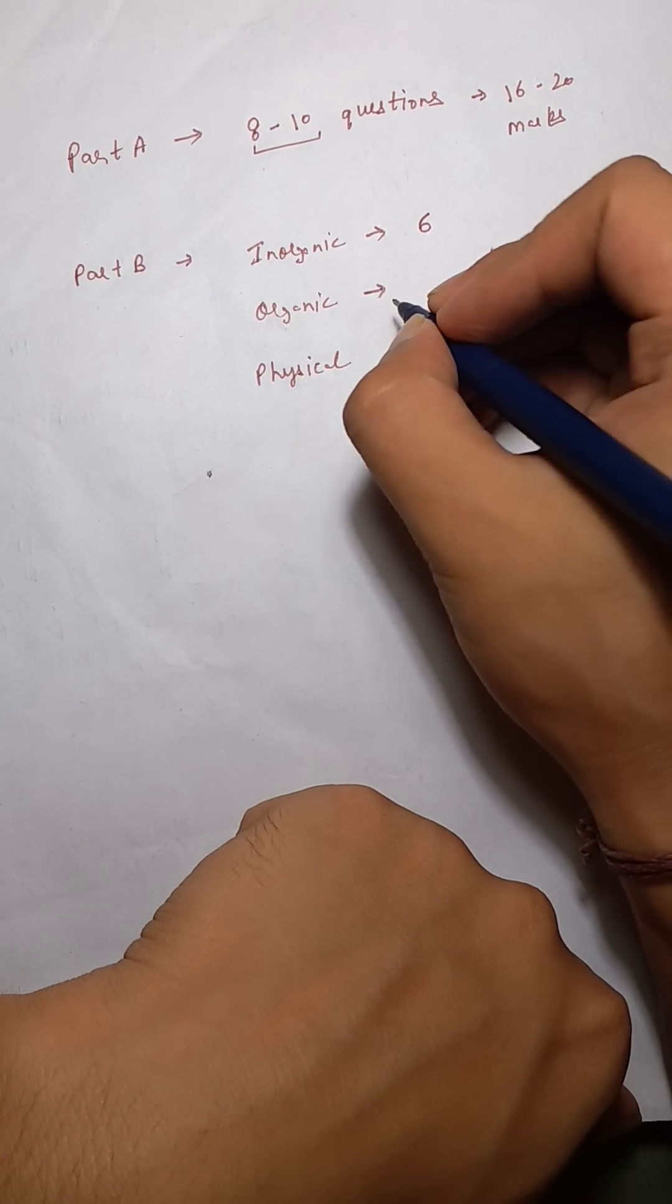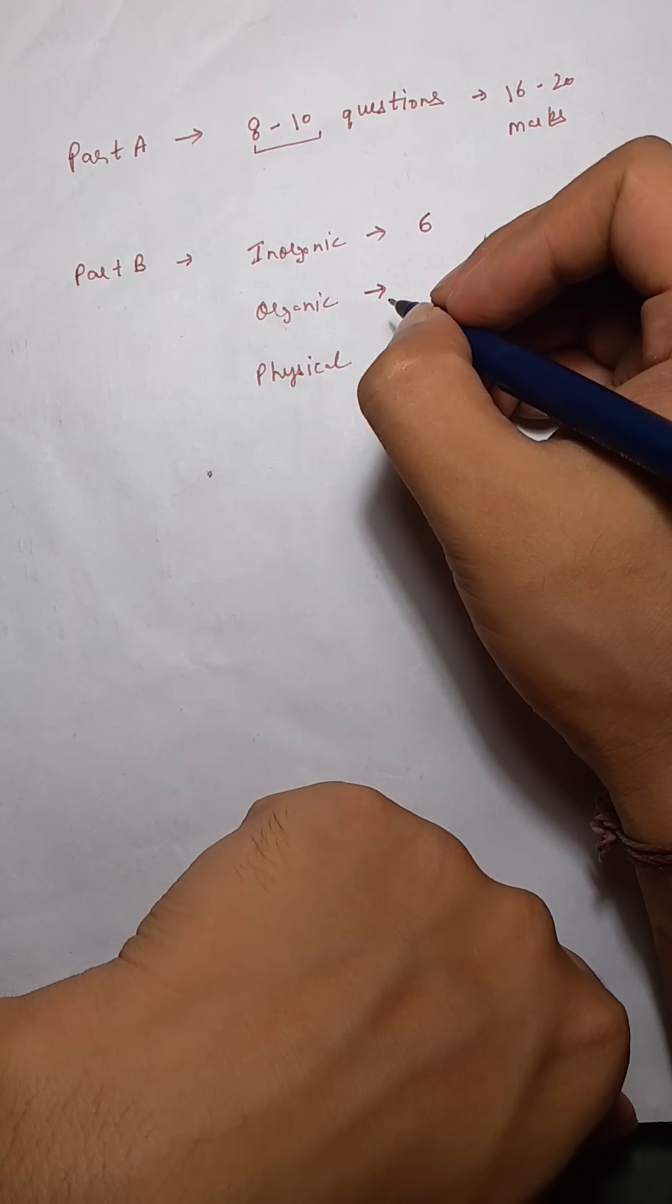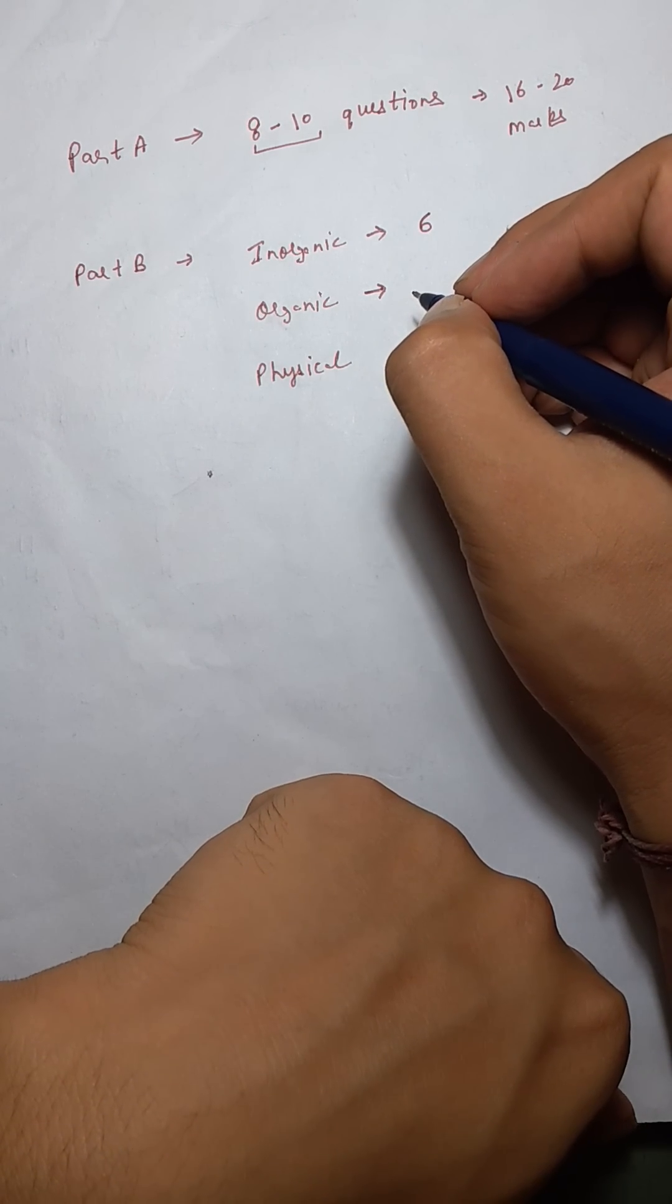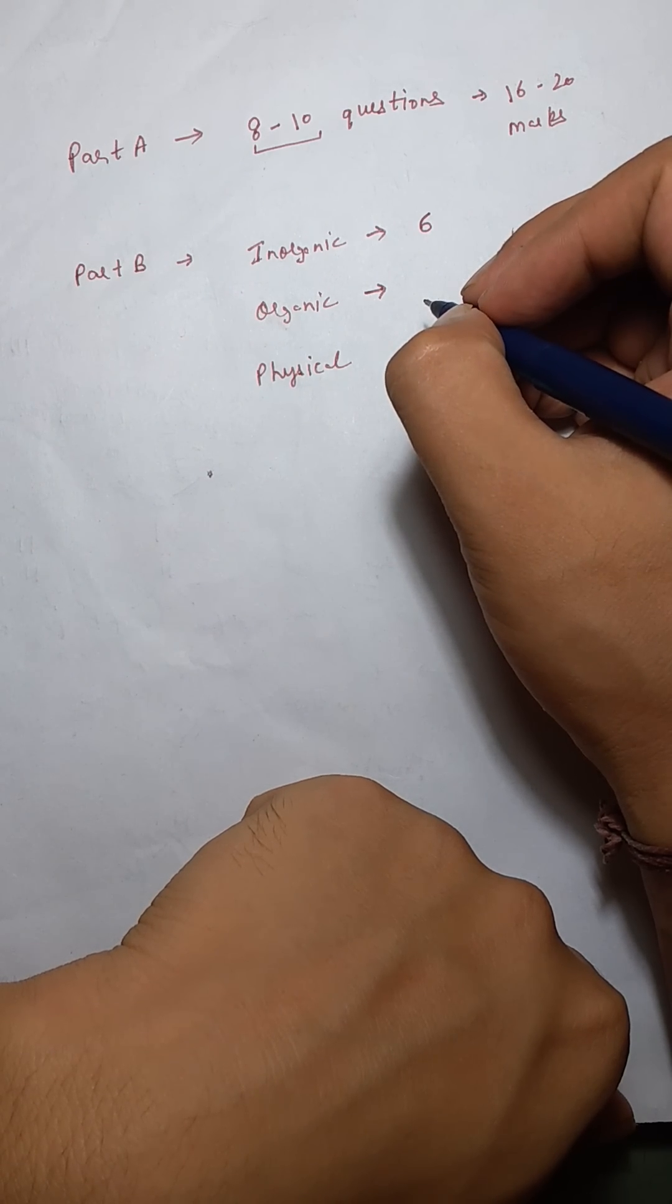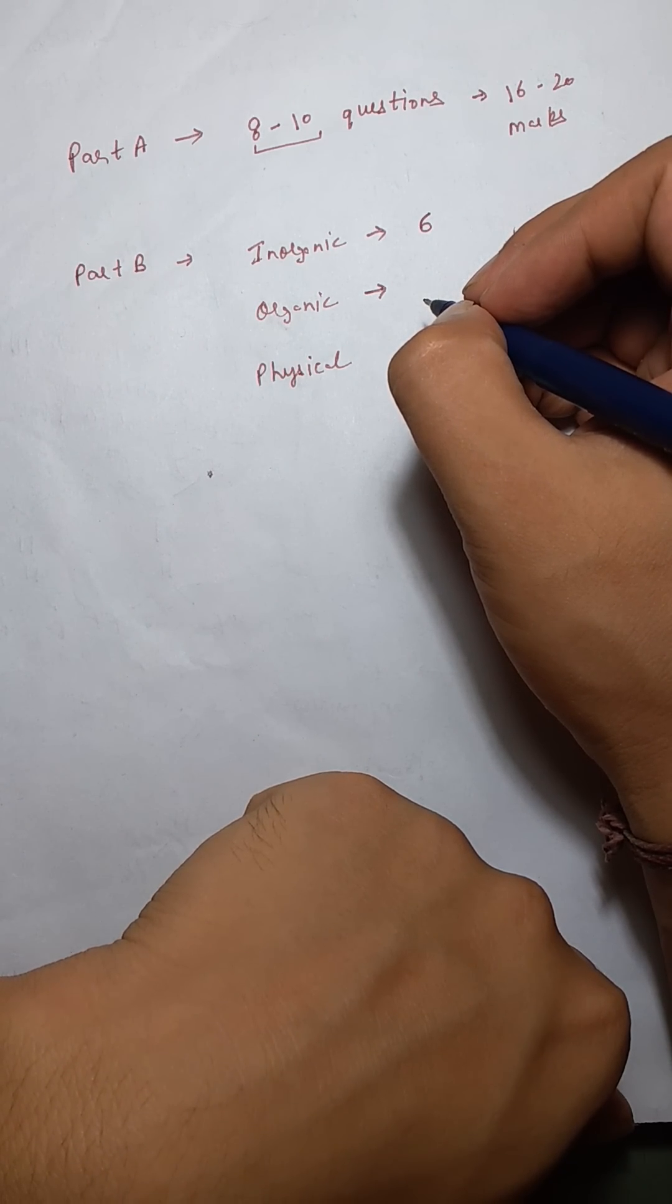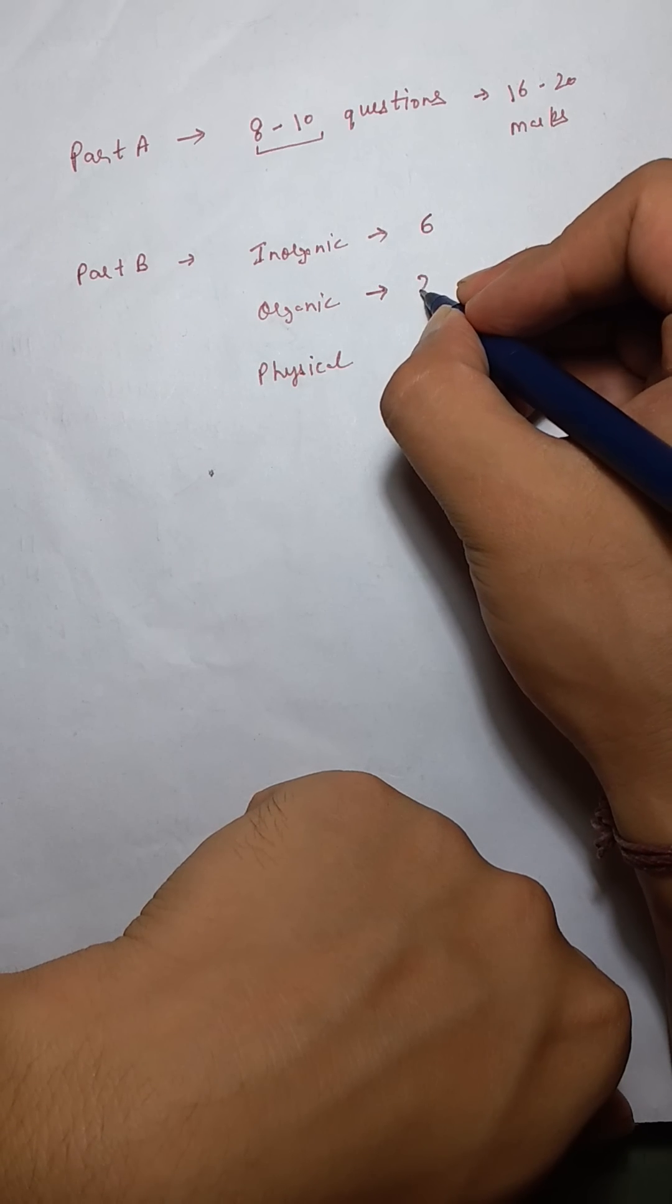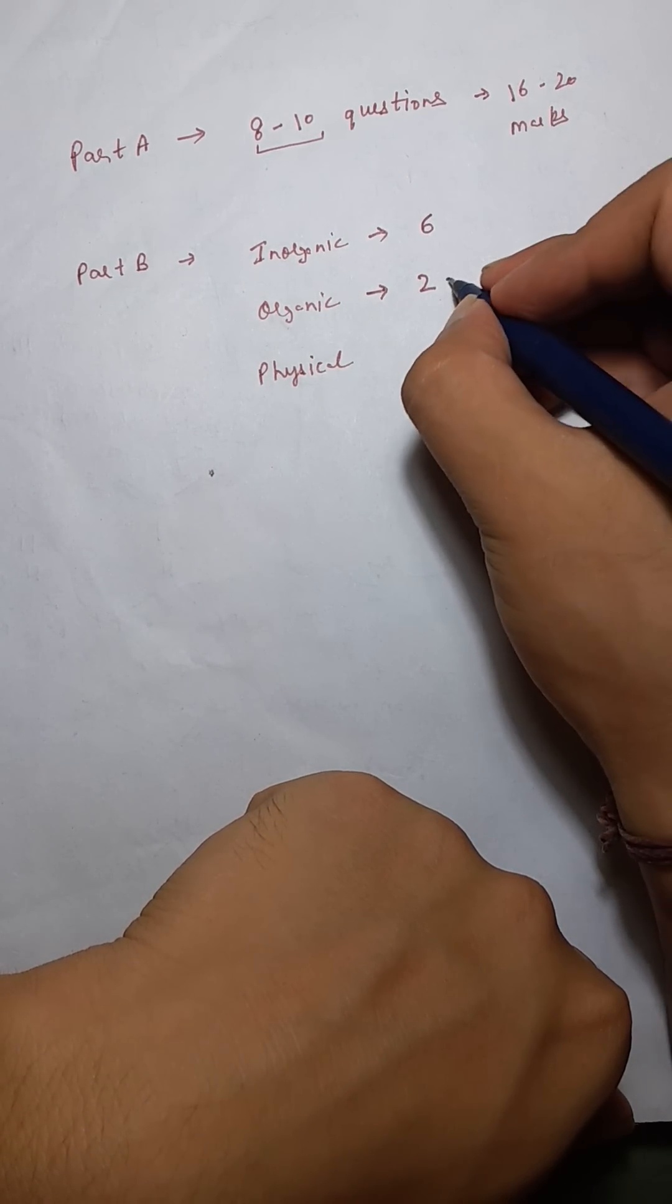Coming on to organic. Organic was I think average. It was a little tougher than inorganic and anyone who knows a bit of organic could have attempted the NBS question, the other question on N-bromosuccinimide and also the NMR question where they had asked the number of peaks for DMSO-D6. So that was easily manageable. So let's say for organic we have two to three questions.